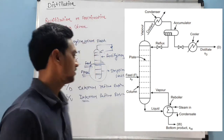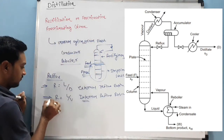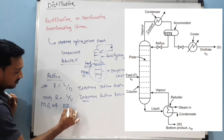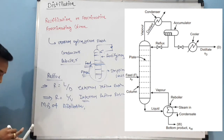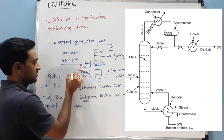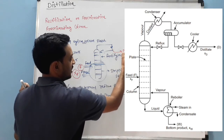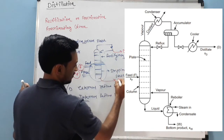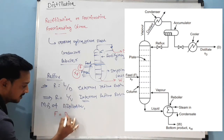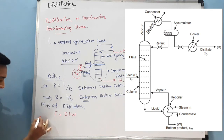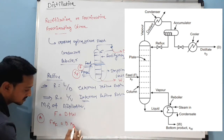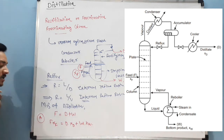Now we are going to use these in the material balance. The overall material balance of the fractionating column: the feed mole fraction of A in feed is XF, distillate is XD, and residue is XW. The overall material balance is F equals D plus W. The material balance of component A gives: F·XF equals D·XD plus W·XW.